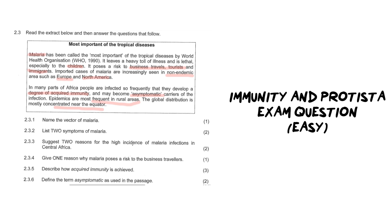Question one says: name the vector of malaria. We need to know what the word vector means — a vector is an organism, an animal, or even a plant that spreads disease but doesn't necessarily experience any of the symptoms. Our answer here is mosquitoes. They are the vectors of malaria because they carry malaria but don't have any signs or symptoms — they don't get sick, they make other animals sick.